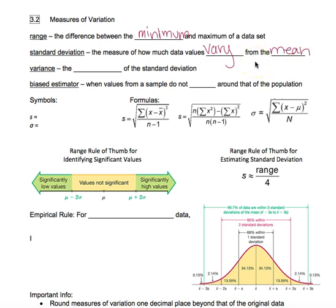If the mean of your data set is 78 and your standard deviation is 5, that means that most of your data would be within 5 points of that mean. The further out you go, the more standard deviations you get away from the mean, the fewer and fewer data points that should be out there.